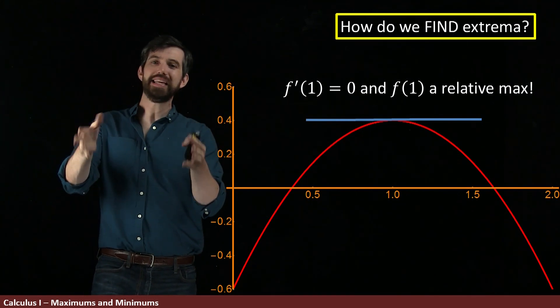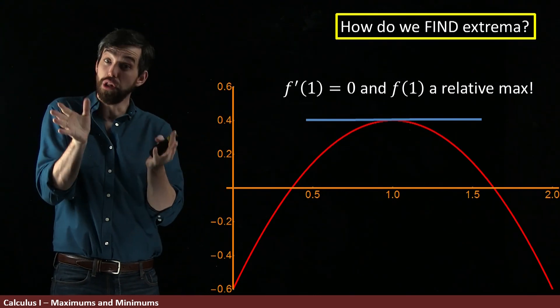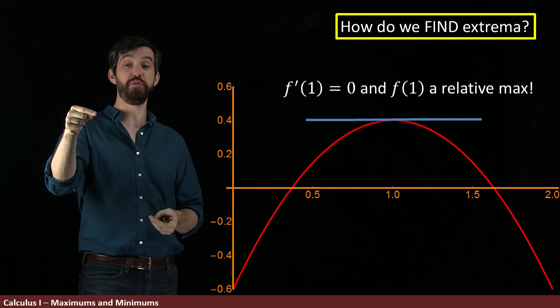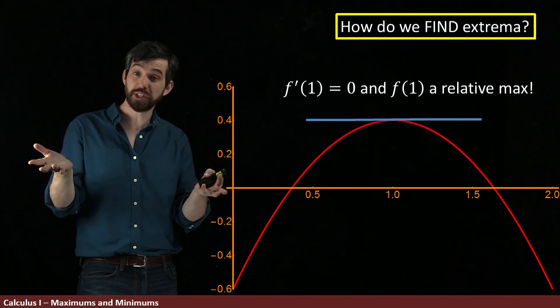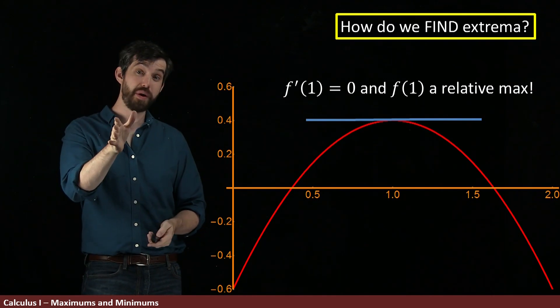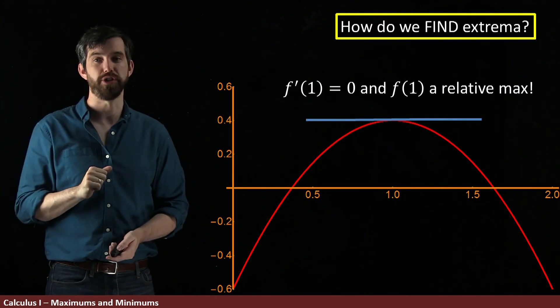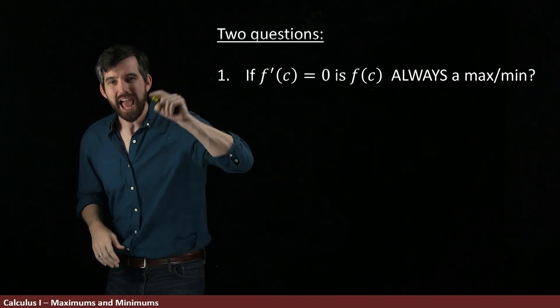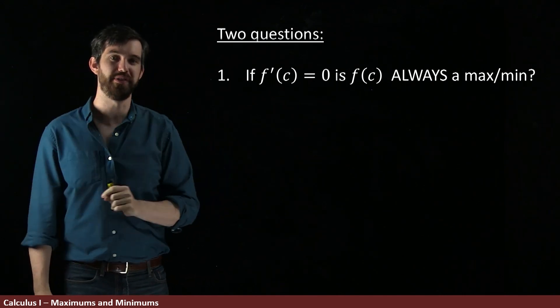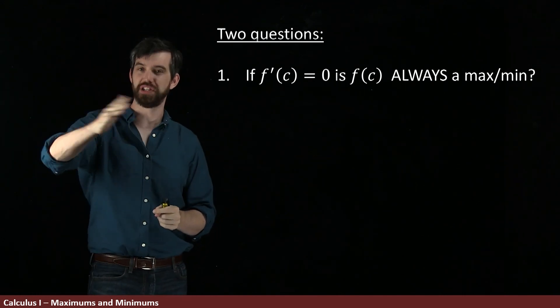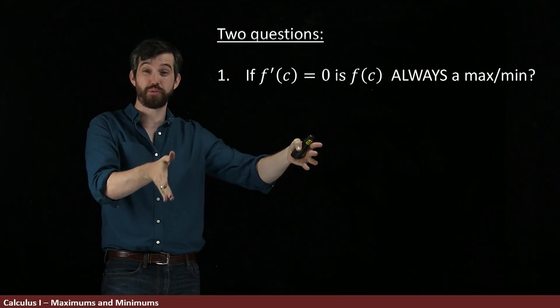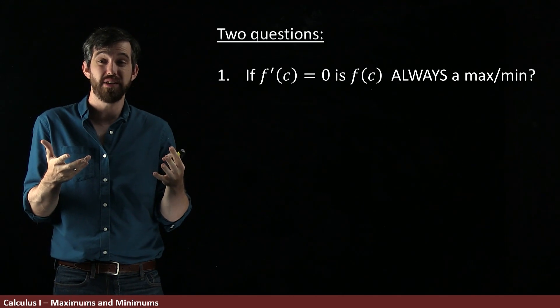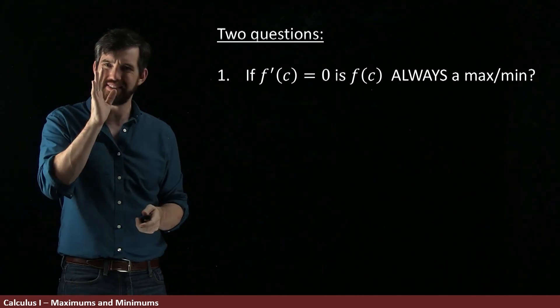So this might lead us to conclude perhaps that whenever the derivative was zero, that that was going to be a maximum or a minimum, possibly. But let's investigate to see whether that's actually true because I have two different questions. The first question that I have for you is, is it the case that every single time the derivative is zero that you're going to get either a relative maximum or minimum?